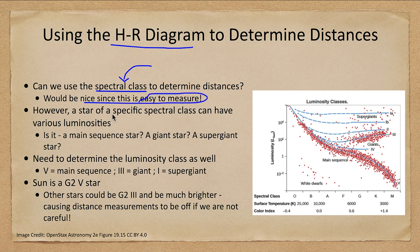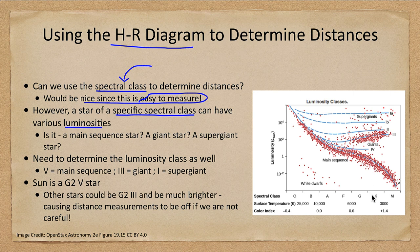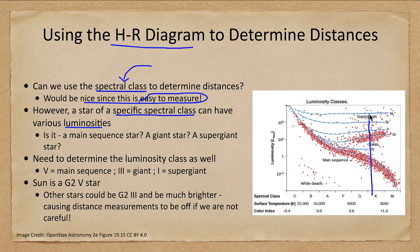However, stars of a spectral class can have various luminosities. You can have a star of a type that can be a main sequence star, luminosity class 5, a giant star, luminosity class 3, or a supergiant star of luminosity class 1.